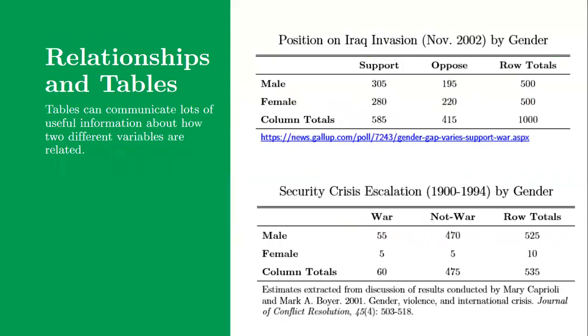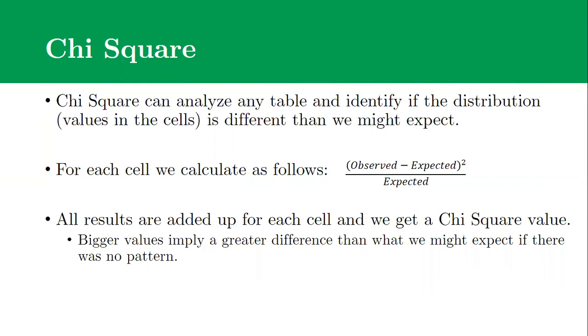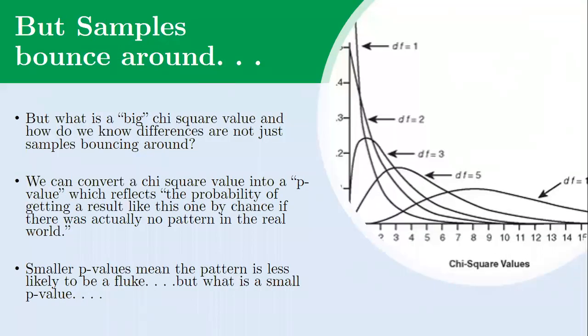We can do that for each and every cell in our table. So each of those four cells, the male support, male oppose, female support, female oppose. We add up the results of that equation for each of those four cells, and that is our chi-square value. It looks at that table and says, okay, we see differences in terms of observed versus expected across this table. When we add it all up, how big of a difference is there in this table compared to what we might expect? The idea is that bigger values on your chi-square test are going to suggest that there's more of a pattern, that something's going on. There's probably a pattern. It's not playing out the way we'd expect. If we're interested in finding relationships, a big chi-square value is great.